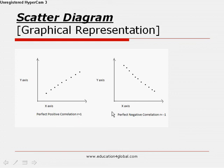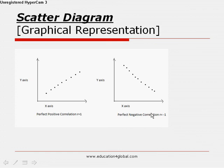In the second diagram, if the value of one variable is increased, then the value of the other variable is decreased. This is negative correlation, and all the dots follow a straight line. It means this is perfect negative correlation, and here the value of r is minus 1.